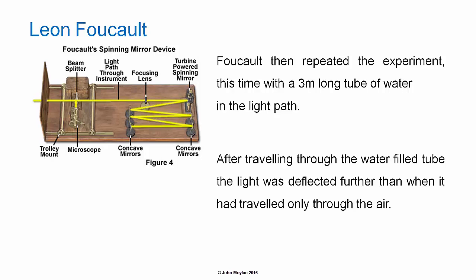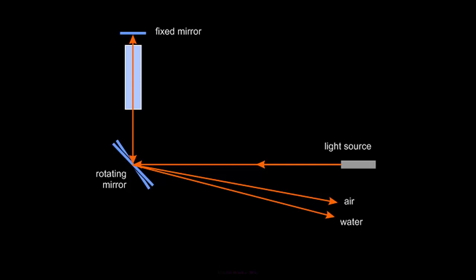After travelling through the water filled tube, the light was deflected further than when it had travelled through the air. The fact that the light was deflected further after having passed through the water indicates that the speed of light in the water was slower than it was in the air.